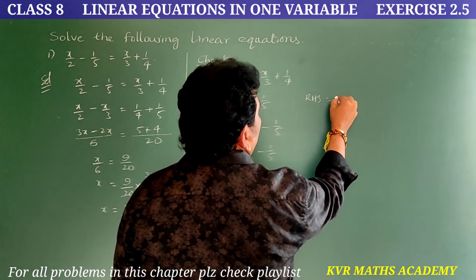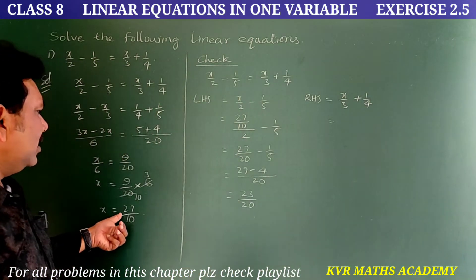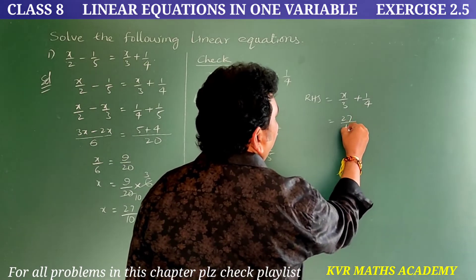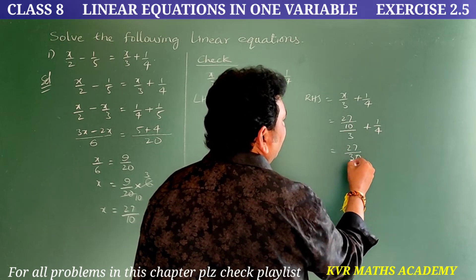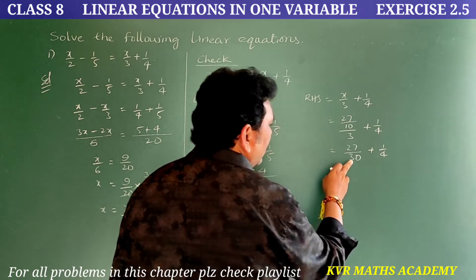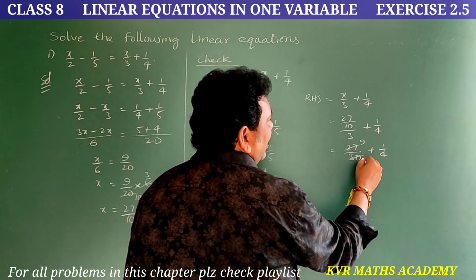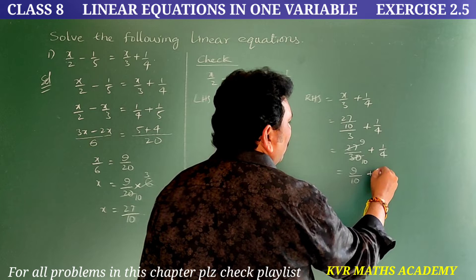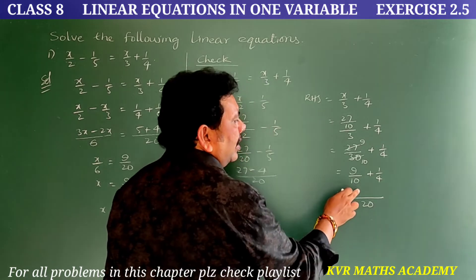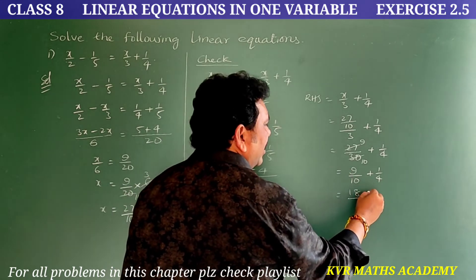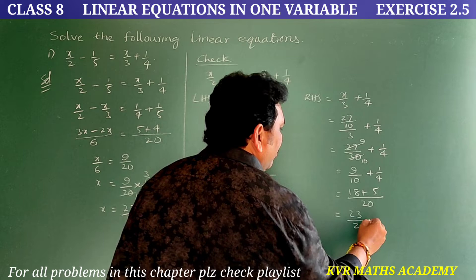Now take RHS = x/3 + 1/4. Substituting x = 27/10: 27/10 ÷ 3 + 1/4 = 27/30 + 1/4 = 9/10 + 1/4. LCM of 10 and 4 is 20: 2 × 9 = 18, plus 5 × 1 = 5. So 18 + 5 = 23, giving RHS = 23/20.